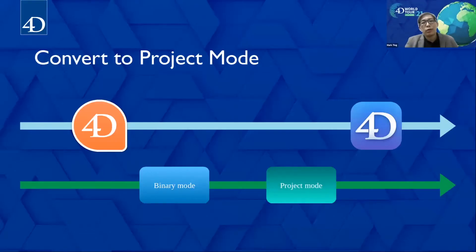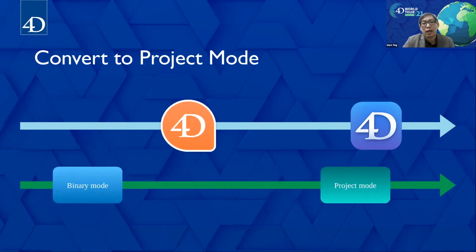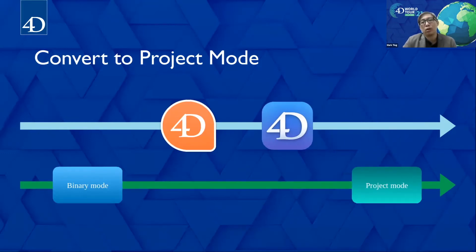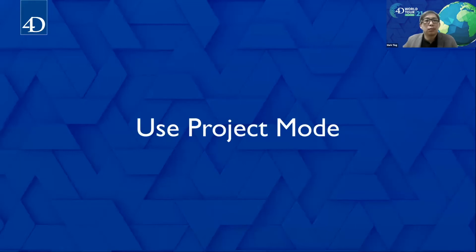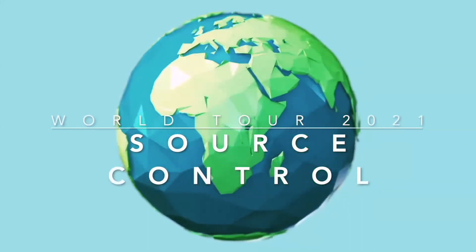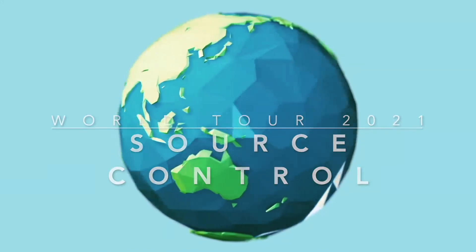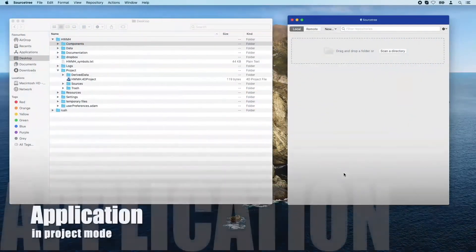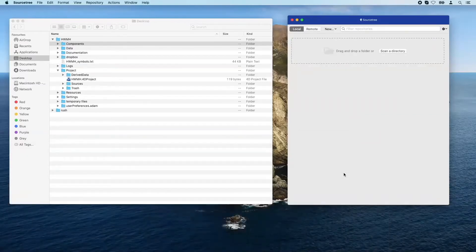In this session we chose a conversion path: first moving to project mode, then to V19. But your own path may be different — you may decide to start by switching to V19 first, then project mode. Now that we are in project mode, let's see what it brings in terms of source control. Switching to project mode allows you to transform your entire database application into a set of text files, enabling the use of source code management tools to better monitor and control development.